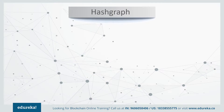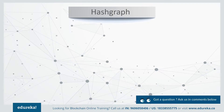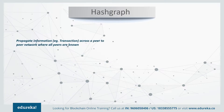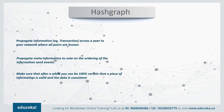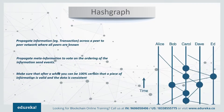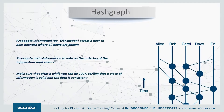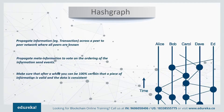The hashgraph algorithm was invented by Leemon Baird, the co-founder and CTO of Swirlds. It is a consensus mechanism based on virtual voting algorithms combined with the gossip protocol to achieve consensus quickly, fairly, efficiently, and securely. The hashgraph protocol firstly propagates information — for example, a transaction — across a peer-to-peer network where all peers are known to each other. Secondly, it propagates meta-information to vote on the ordering of events. Thirdly, it ensures that after a while you can be 100% certain that a piece of information is valid and the data is consistent. It promises total ordering of events and, under the assumption that asynchronous messaging is allowed, it promises strong Byzantine fault tolerance.